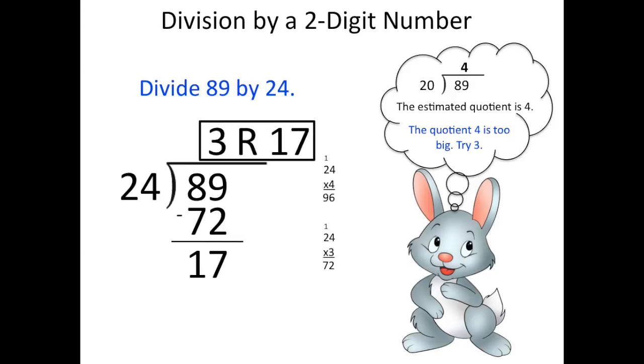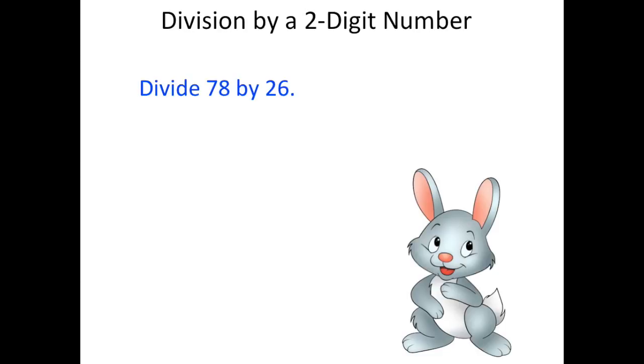So let's go ahead and try another one. Mr. Bunny was also asked to divide 78 by 26. So once again, he set it up as long division, took a look at the divisor, 26, and rounded that to 30 so that he could estimate about how many times 26 can go into 78.